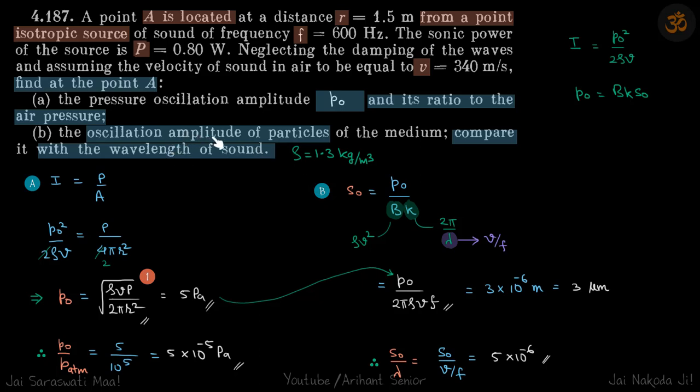Now in the second part, we need oscillation amplitude. We need to find s₀, which is P₀/Bk. Now B = ρv², and k = 2π/λ, and λ = v/f because v and f are given.